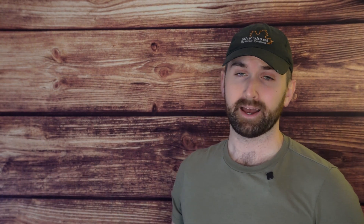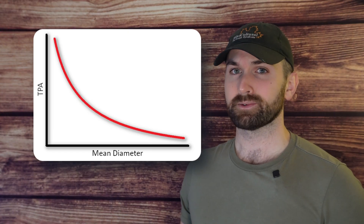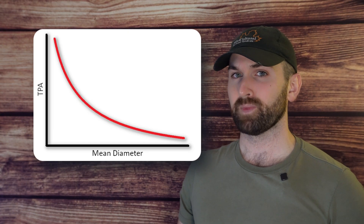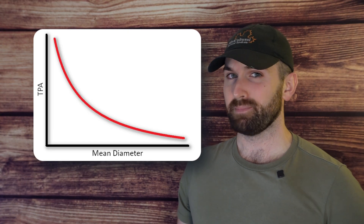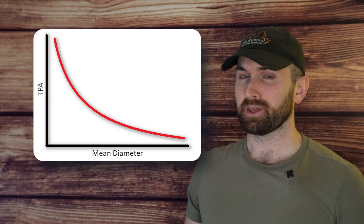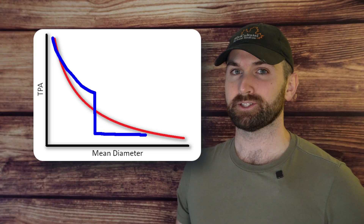If we look at a chart of trees per acre over time, it looks like this. These storms, like we saw in Michigan, are just part of this progression. But instead of it being gradual, it's kind of front-loaded — it looks something like this. Or alternatively, it happens to a more mature forest, in which case it's just that stand reinitiation phase.